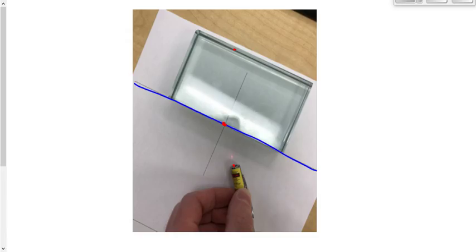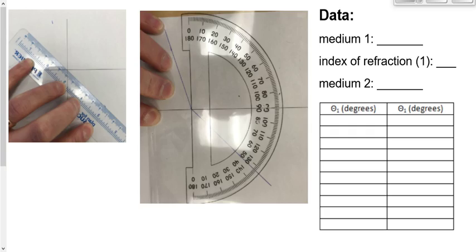Looking from above — minus the glass — you have the point where it left the laser, the point where it left the glass, and the intersection point where the laser beam entered the glass. Take a ruler and connect those two dots on the entry side, then connect the two dots on the exit side. Then measure two things: the angle of incidence and the angle of refraction.